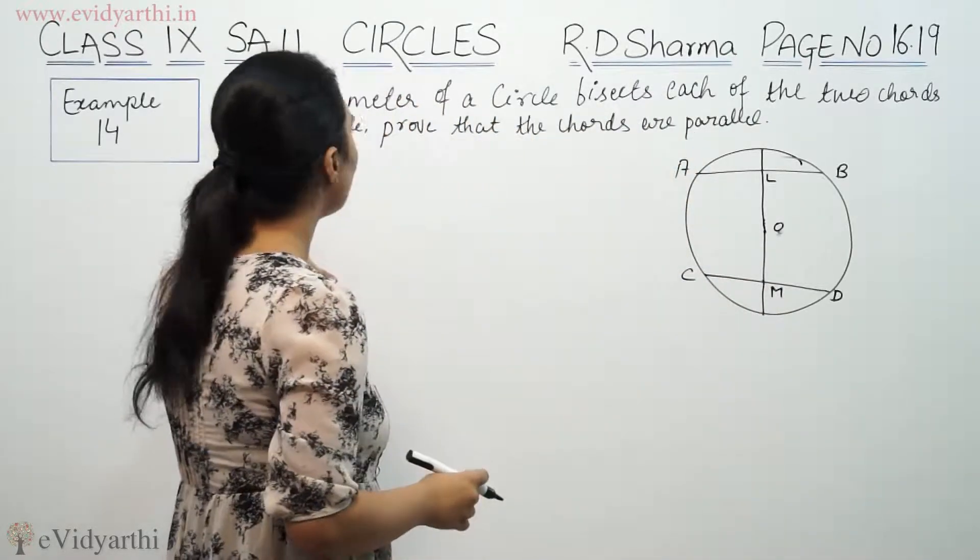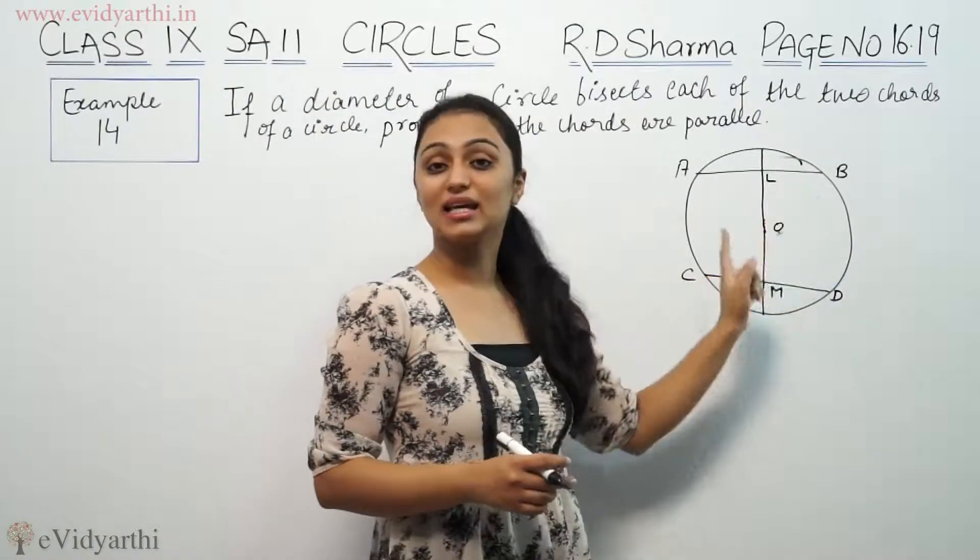So now, prove that the chords are parallel. How many chords are there? Now, O is the center of the circle.